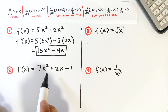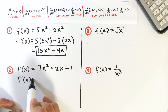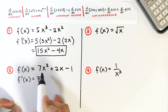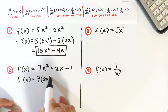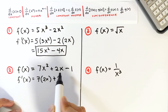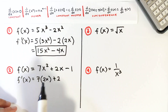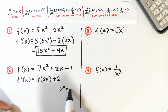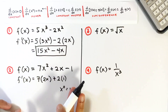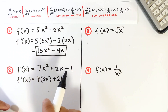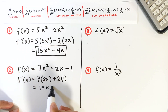Next, f(x) = 7x squared plus 2x minus 1. Its derivative f'(x): copy the constant 7 and differentiate x squared, giving 2x, then plus 2 times the derivative of x. For x, bring down coefficient 1, and 1 minus 1 is 0, so x raised to 0 equals 1, meaning the derivative of x is 1. The derivative of the constant negative 1 is 0. So the final answer is 14x plus 2.